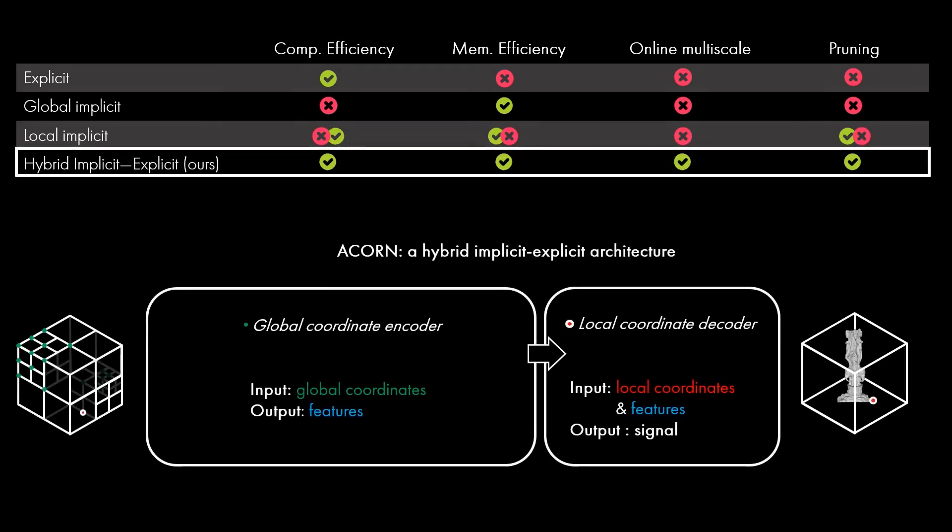In this work, we improve training times and scalability of neural network representations with a new hybrid implicit-explicit network architecture. The architecture is computationally efficient and memory efficient, relies on a multi-scale approach that allocates more training and inference time to regions of the signal that are more complex and detailed, and prunes out regions of empty space to conserve network capacity.